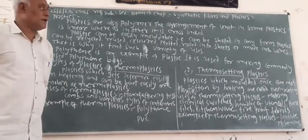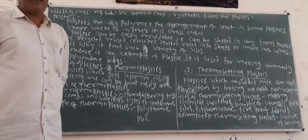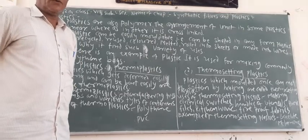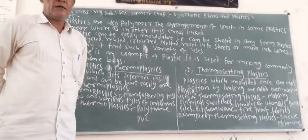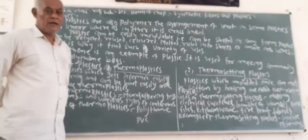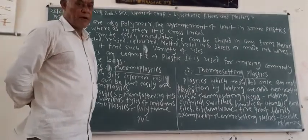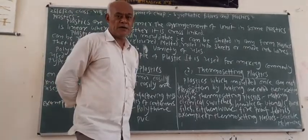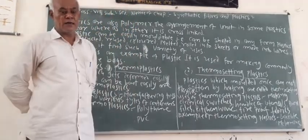The arrangements of small units in a plastic are of two types. First, the arrangement is in a linear way, and another type of arrangement of units in plastic is the cross-linked type.